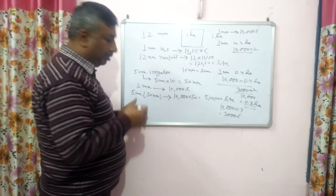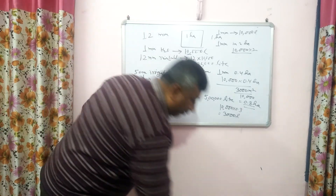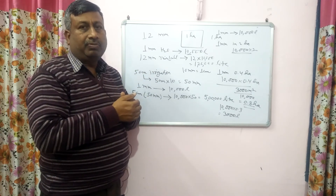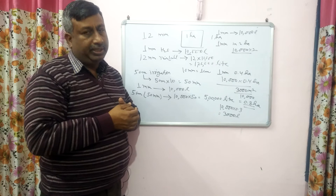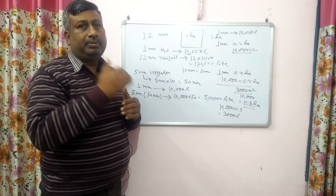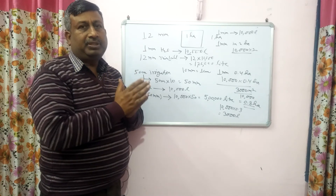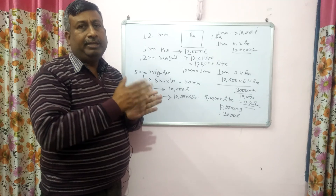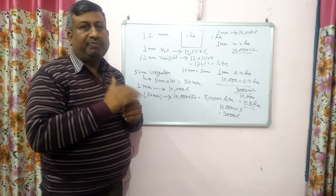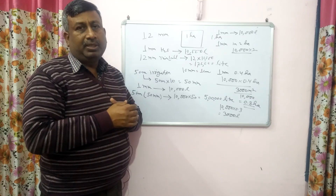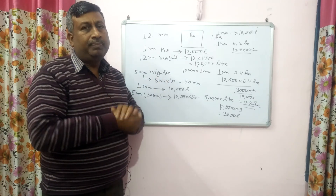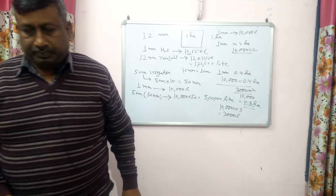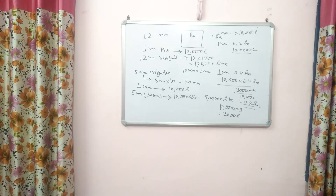This is the basic calculation: how one millimetre of water equals ten thousand litres, based on the density of water. The basic formula is volume equals area multiplied by height, where height means the depth of water lost in ET, rainfall, or irrigation. This was the basic lecture. Thank you very much.